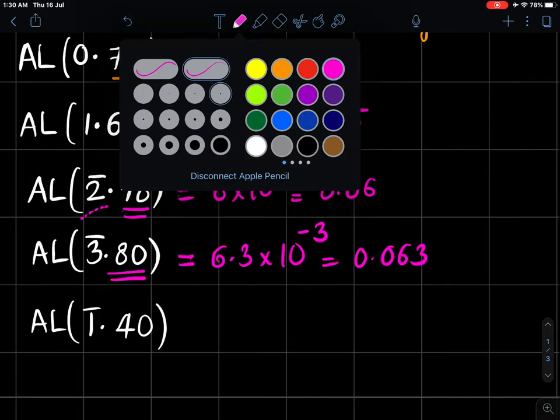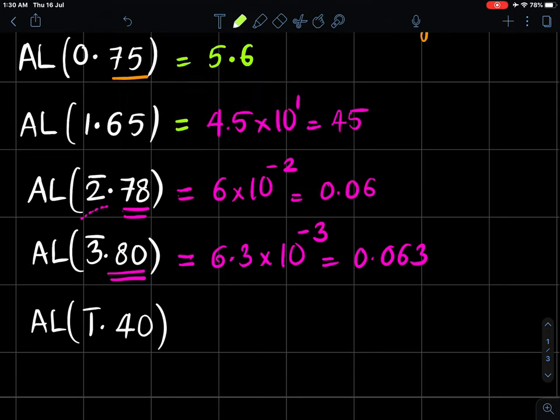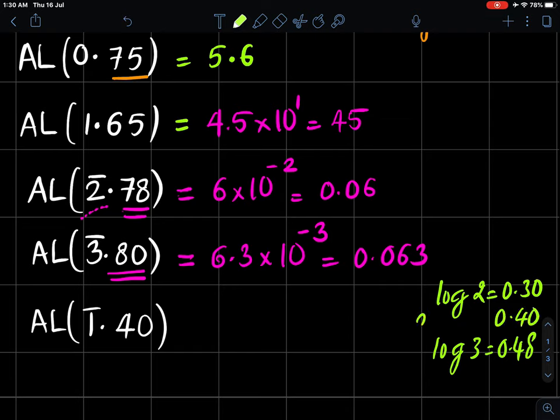What is antilog of -1.40? We know log of 2 is 0.30 and log of 3 is 0.48. Somewhere in between is 0.40, so I can guess 2.5. So it is 2.5 into 10 to the power minus 1.